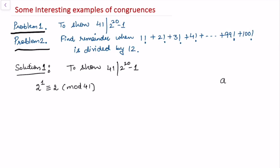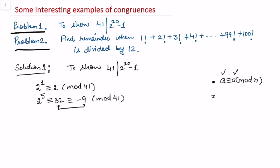We use the property that a is congruent to a modulo n — the reflexive property of congruences, discussed in earlier videos. Looking at a power we're comfortable with: 2 to the power 5 is 32, and 32 is congruent to -9 modulo 41, because 32 minus (-9) = 41, and 41 is congruent to 0 modulo 41. So 32 ≡ -9 (mod 41).